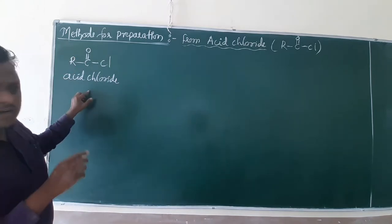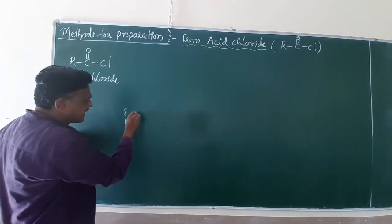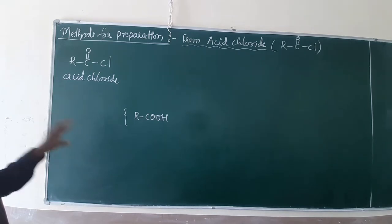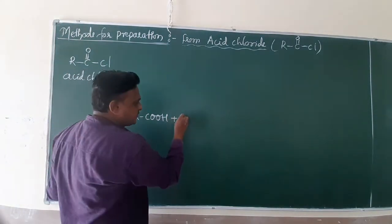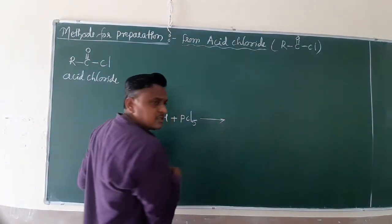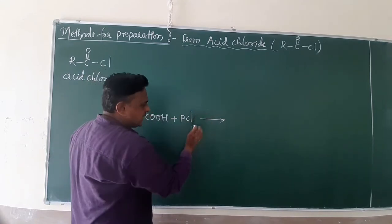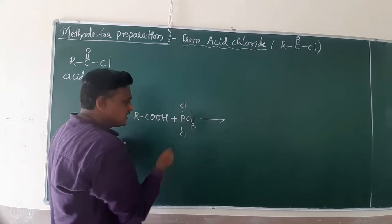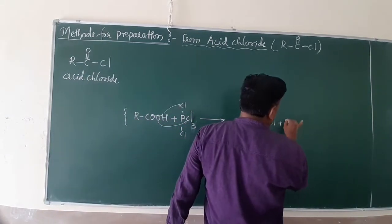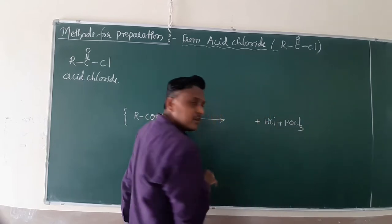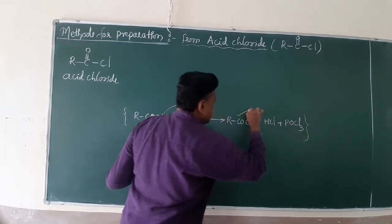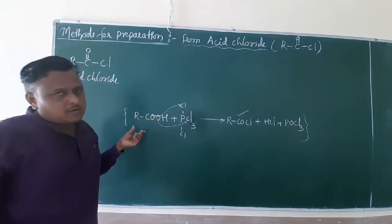Let me briefly review how acid chlorides are prepared, which we covered in the last class. When carboxylic acid — with formula R-C(=O)-OH — reacts with phosphorus pentachloride (PCl5), the OH and Cl combine to release HCl and POCl3, and what remains is R-C(=O)-Cl, which is your acid chloride. Acid chlorides are derivatives of carboxylic acids.